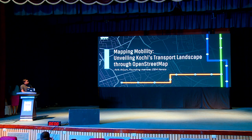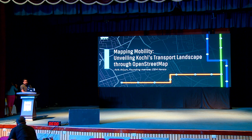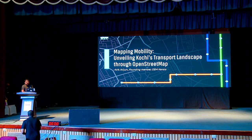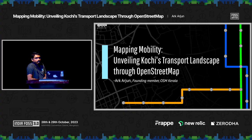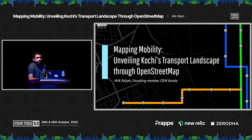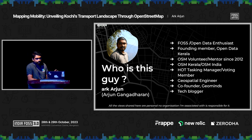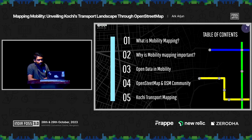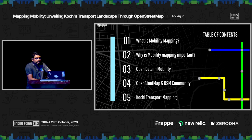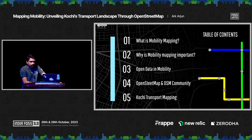I'm here to talk about a mapping project which we did as a commercial project, completely done by community people, which leads to earning and sustainability for the community. Here is an outline of what I'm going to talk about: what is mobility mapping and why is it important, open data in mobility, OpenStreetMap and OSM communities, and about the Kochi mapping project.